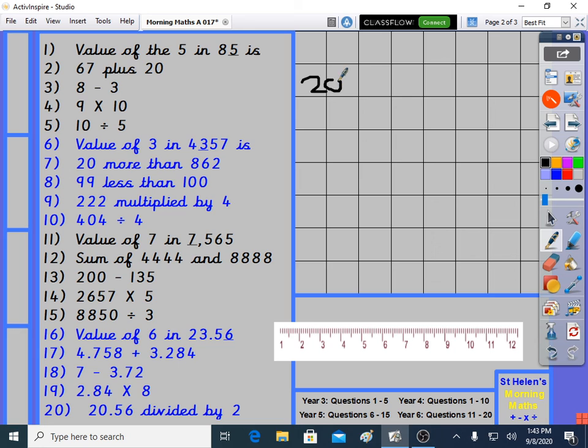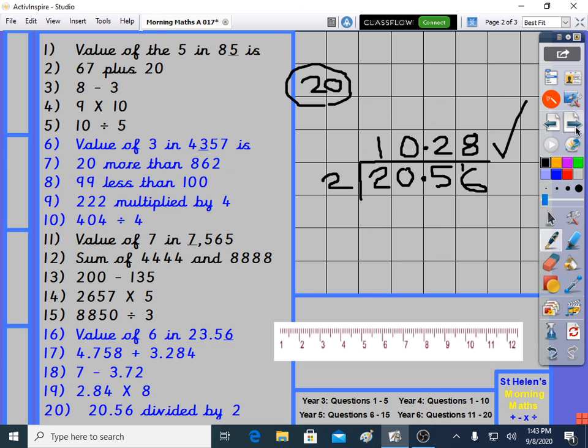Last question. I always say to children in my set, you can get really fast on these bus stops in the end. 20.56 divided by 2. And in the end, children can get to accurate 5 second bus stops with enough practice. Makes your life a lot easier when you're really good on the bus stop. 1 in there. 0 in there. 2, 1, and 8. 10.28. We halved it, didn't we? We halved 20.56. Half of 20 is 10. Half of 56 is 28. So that's correct. 10.28. Let's look at the answers. 10.28 and everything else.